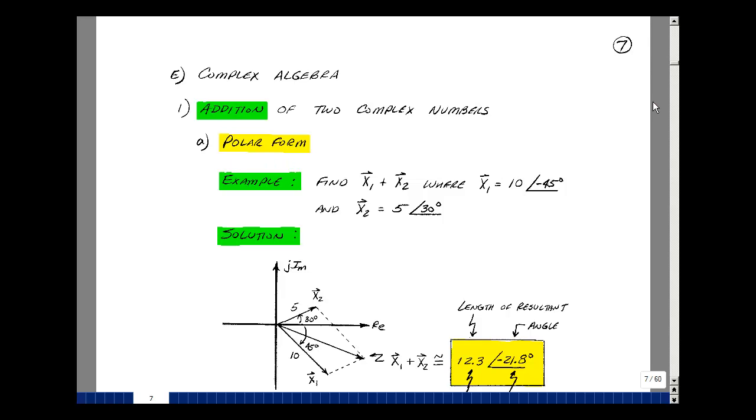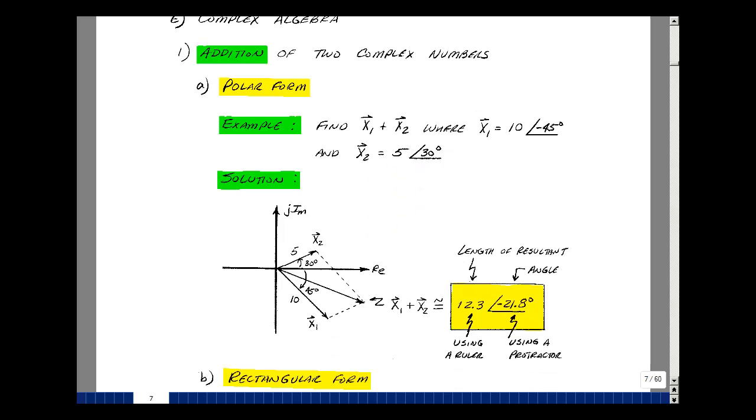Suppose they have two phasors, X1 and X2, and I'm going to add them. X1 is equal to 10 at angle minus 45, and X2 is 5 at angle 30. One way to add them is graphically. So let's take X1. It has a length of 10 and an angle of minus 45, which is halfway between the real and imaginary axis, and then I use the length of about 1 inch to give my value of 10.